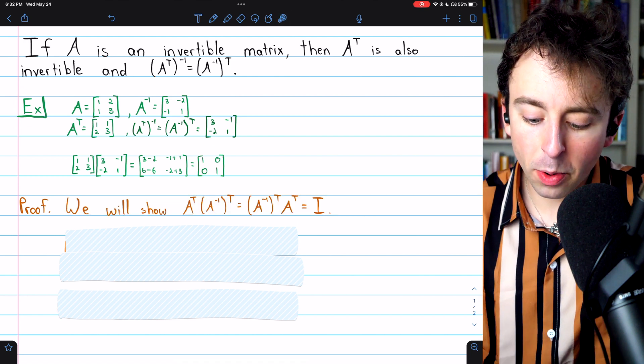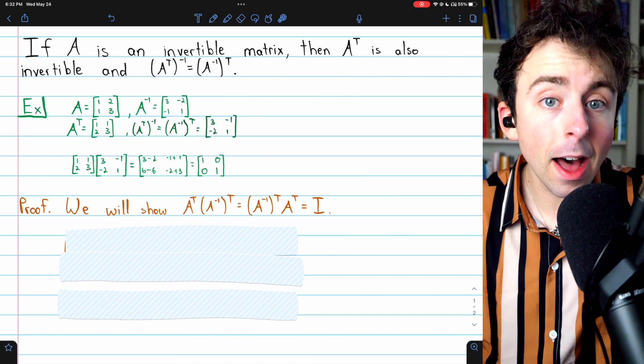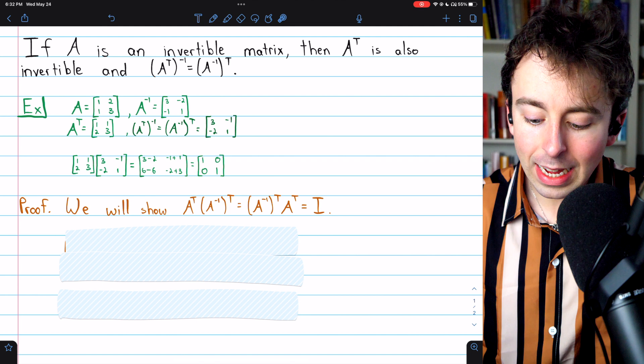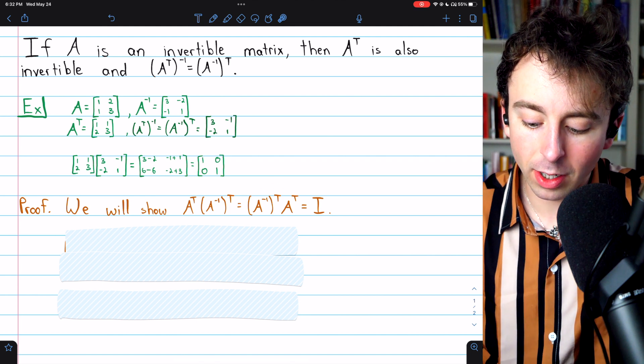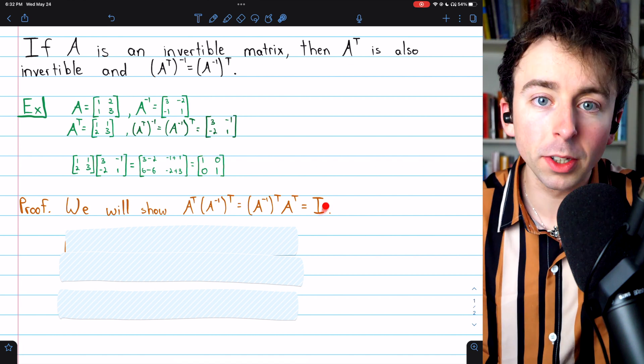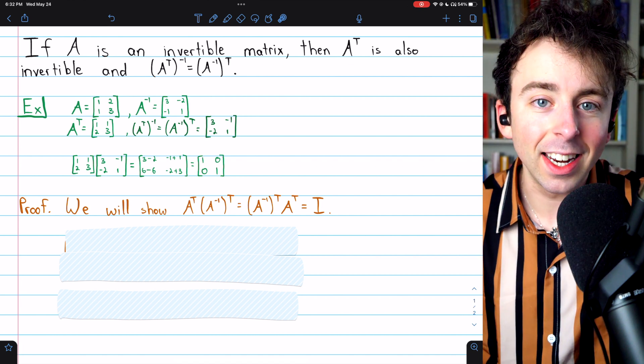To prove the result, we're going to show that A transpose times our claimed inverse, which is A inverse transpose, is equal to the multiplication in the other order. And they're both equal to the identity. So it doesn't matter what order you multiply them in, you're going to get the identity matrix.